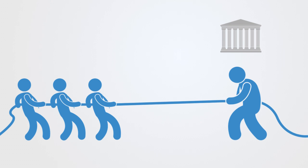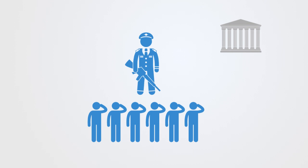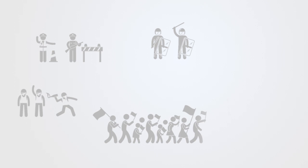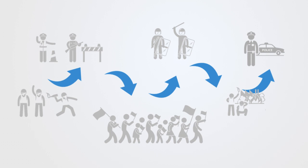Conflict theory emphasizes the role of coercion and power in producing social order. This perspective is derived from the work of Karl Marx, who saw society as fragmented into groups that compete for social and economic resources. Social order is maintained by dominance, with power in the hands of those with the greatest political, economic and social resources. Conflict theory sees society as a dynamic entity constantly undergoing change as a result of competition over scarce resources. Whereas functionalism understands society as a complex system striving for balance and stability, the conflict perspective views social life as competition that leads to change.